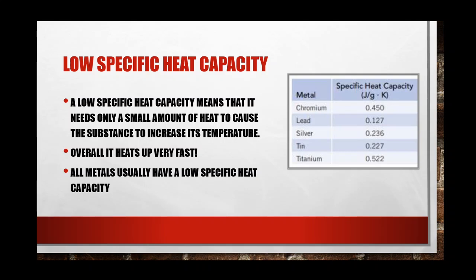Here's a table of substances with low specific heats — you can tell they're under one. A low specific heat capacity means it needs only a tiny amount of heat to cause the substance to increase its temperature. Overall, that means it heats up very, very fast. So if you put it out in the sun, whatever has a low specific heat — definitely under one — it's going to heat up fast.